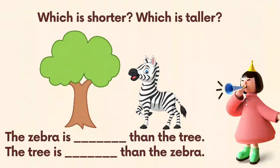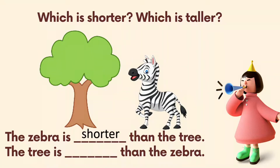Which is shorter and which is taller? The zebra is shorter than the tree, and the tree is taller than the zebra.